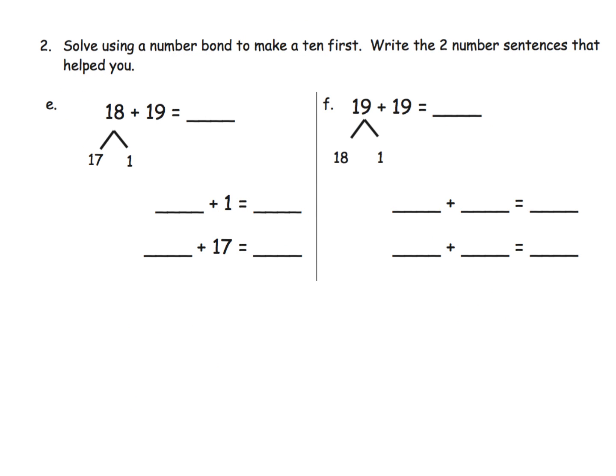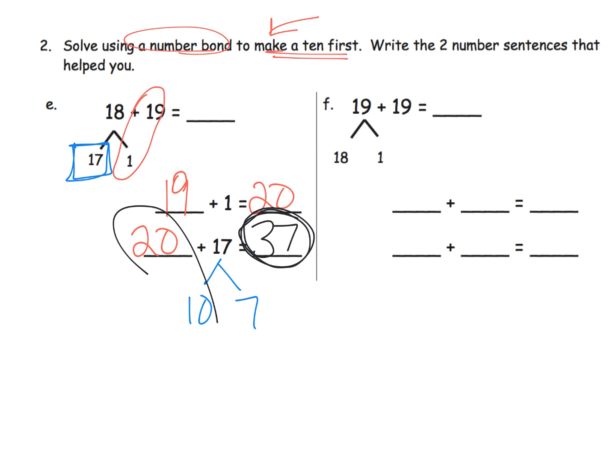Now here we're going to continue using a number bond, but this time we're going to use make a 10 first. Now for some reason they decompose the 18. We could have just as easily decomposed the 19. But they're thinking about that 19 and we need one more to get 20. So that's why they decomposed 18 to be 17 plus 1. So 19 plus 1 gives us 20. Now we're going to take that 20 and add in the remaining 17 that we haven't quite finished off, and that answer is 37.